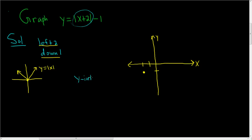To find any intercept, you set the other one equal to 0. So to find the y-intercept, you set x equal to 0. So y is equal to the absolute value of 0 plus 2 minus 1. So this is equal to the absolute value of 2 minus 1. The absolute value of 2 is just 2.